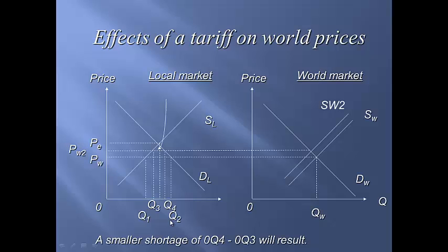The cost has been that, because prices have got more expensive, demand has dropped from Q2 to Q4, and this represents a misallocation of resources. That's one of the main reasons why there have been arguments to reduce tariffs, like they have been in Australia — bringing the price back down from PW2 to PW. What that does is it loses jobs in the local industry, but it makes everything cheaper for locals demanding goods and services.